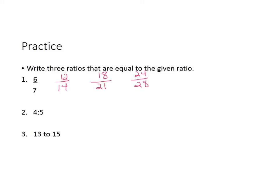4 to 5, if you take them both times 2, you would have 8 to 10. Times 3, you would have 12 to 15. Times 4, you would have 16 to 20. 13 to 15, if you take them times 2, you would get 26 to 30. If you take it times 3, you would get 39 to 45. If you take it times 4, you would get 52 to 60.